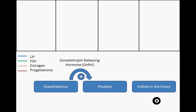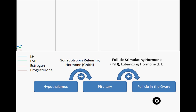Roughly every 28 days, GnRH released by the hypothalamus results in the release of FSH and LH from the pituitary. These hormones, in turn, bring about changes in the ovaries. Specifically, a follicle — a single egg cell surrounded by many supporting cells — is stimulated by FSH to progress in its development.